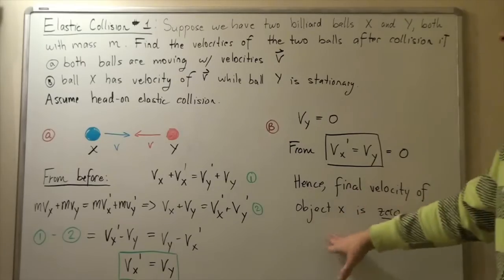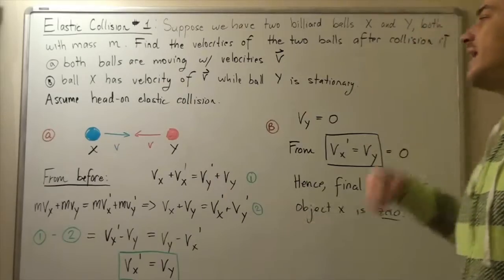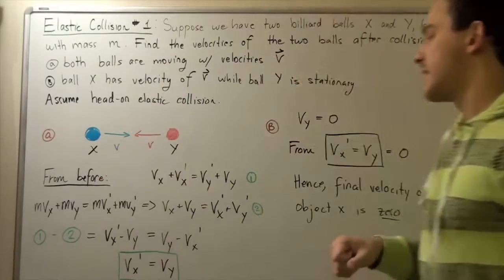The final velocity of object X is zero, while the final velocity of object Y is the same velocity that the initial ball X had.